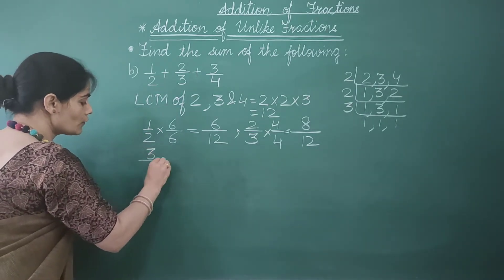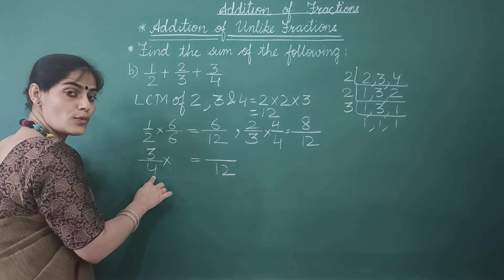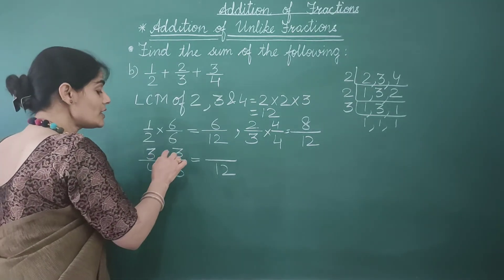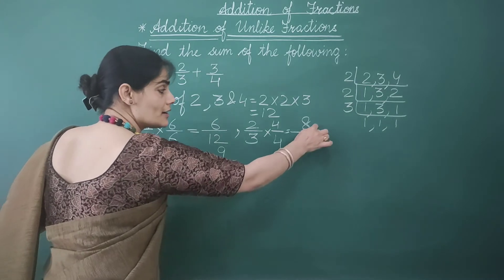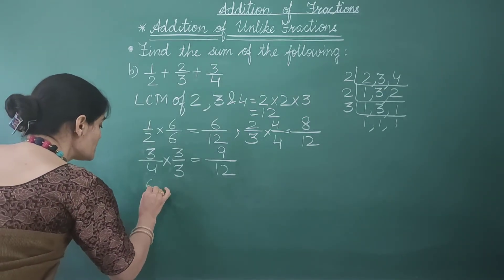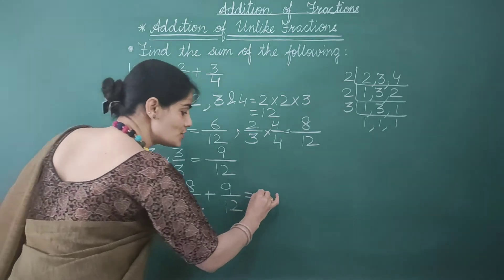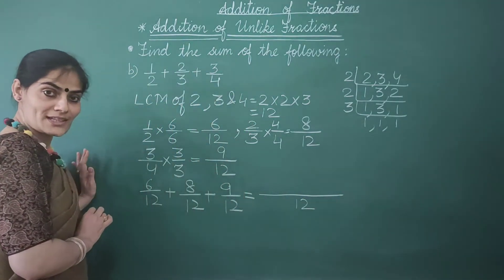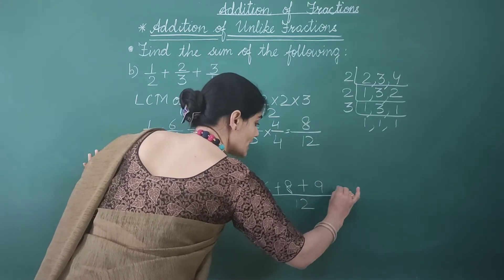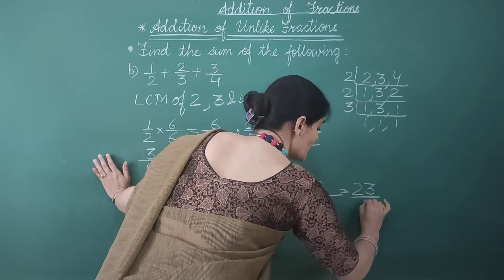I convert 3 by 4 to its equivalent fraction with denominator 12. 4 multiplied by 3 equals 12, so the numerator is also multiplied by 3: 3 times 3 gives us 9, giving 9 by 12. All these are now like fractions. So the sum is 6 by 12 plus 8 by 12 plus 9 by 12. The common denominator is 12, and 6 plus 8 plus 9: 6 plus 8 is 14, and 14 plus 9 equals 23 by 12.